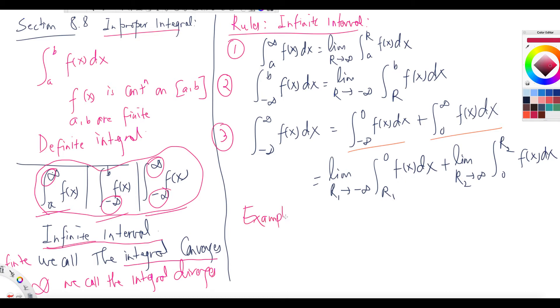Whenever you find the integral of this type, if the integral is a finite number we call that convergent. If that integral is infinite — although the limits are infinity, the total value of the integral can still be a finite number — in that case if it goes to infinity we call it divergent.